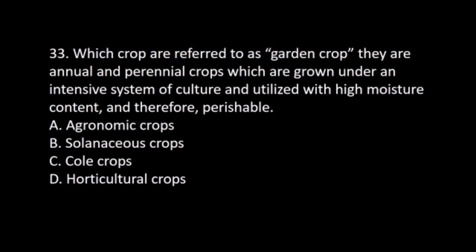Number 33. Which crops are referred to as garden crops? They are annual and perennial crops grown under an intensive system of culture, utilized with high moisture content, and therefore perishable. A. Agronomic crops. B. Solanaceous crops. C. Coal crops. D. Horticultural crops. The answer is D. Horticultural crops.